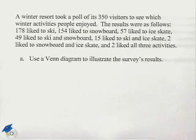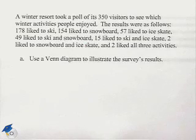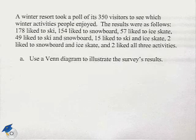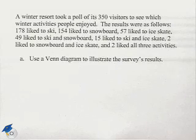In our following problem we're going to create a Venn diagram from given information. A winter resort took a poll of its 350 visitors to see which winter activities people enjoyed. The results were as follows: 178 like to ski, 154 like to snowboard, and 57 like to ice skate.